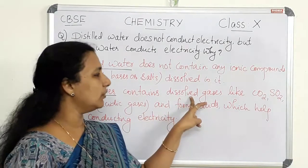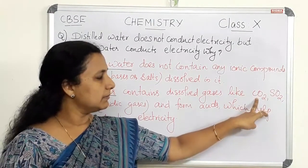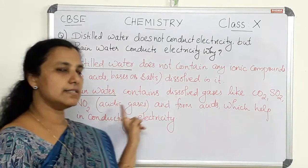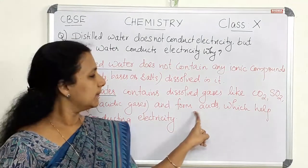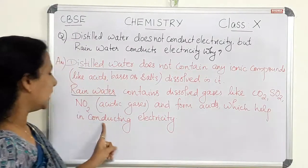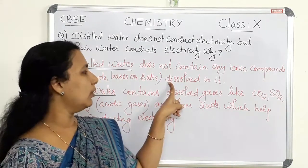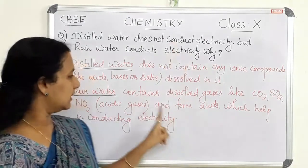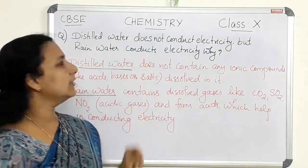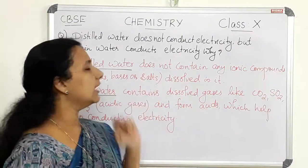When rain water falls to the earth, in the atmosphere there may be some acidic gases like carbon dioxide, sulfur dioxide, or nitrogen dioxide. These acidic gases cause the formation of acids, and those acids produce ions in solution, which help in conducting electricity. In the case of distilled water, there is no chance of producing ions, so it will not conduct electricity. In the case of rain water, there is a chance of producing ions or charged particles — that is why rain water conducts electricity.